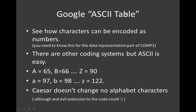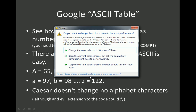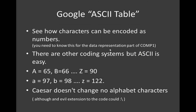Let's have a quick look at an ASCII table. The best thing for you to do is to Google the term 'ASCII table'. ASCII is part of Comp1 — basically a number encodes a character. So for ASCII, capital A is 65, B is 66, all the way up to Z which is 90. You can apply the same for lowercase characters. There are a lot of non-alphabetic characters. Caesar only deals with alphabetic characters — it doesn't deal with any others.